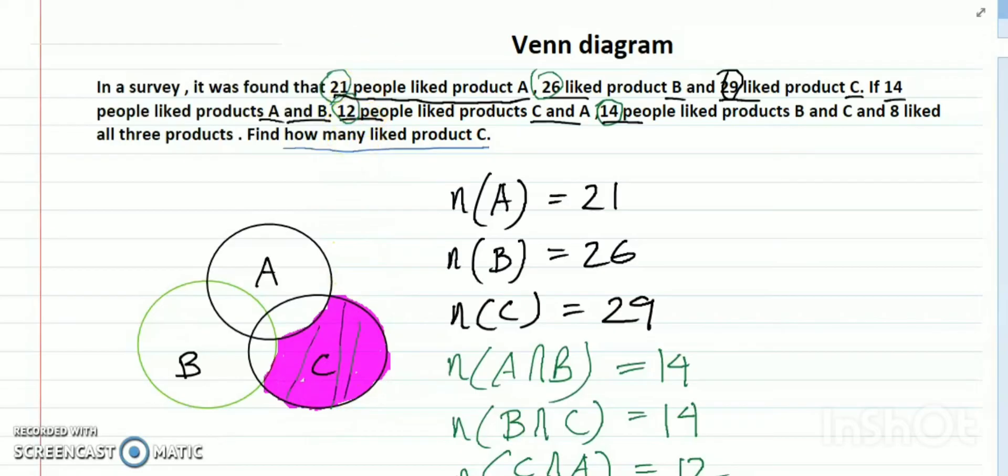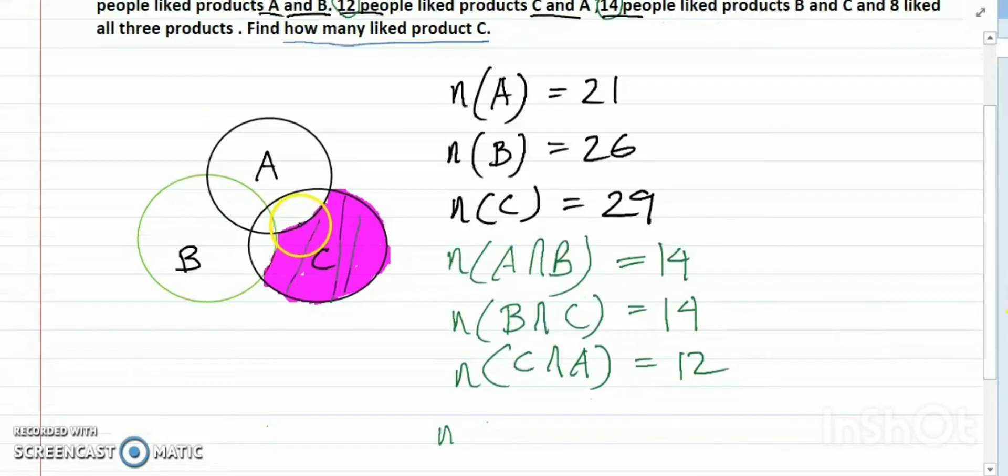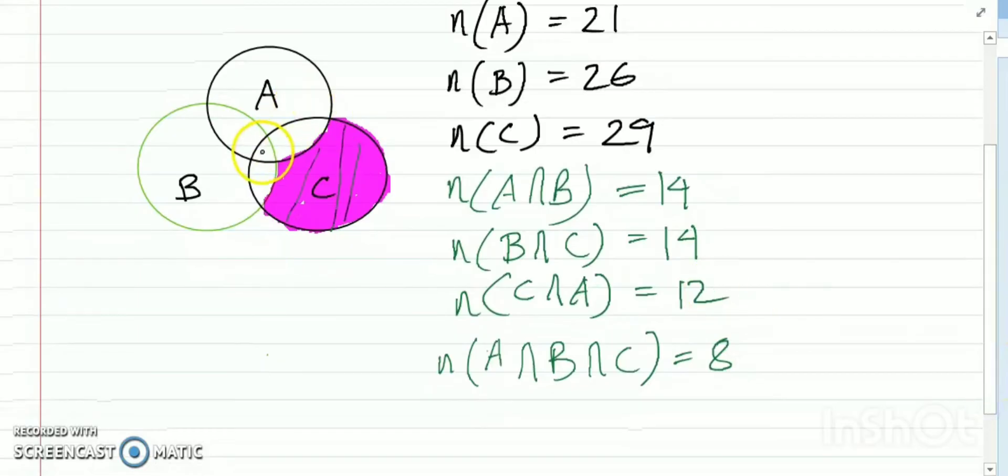How can I find this portion? This region A∩B∩C equals 8, which is given. So this portion is 8. This total area A∩B equals 14.